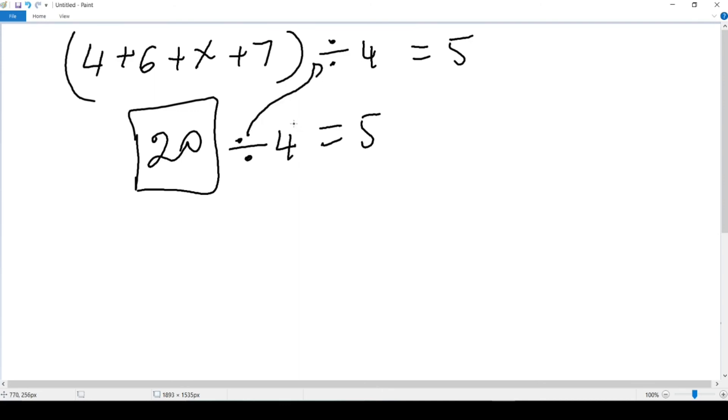So this whole thing right here inside my parenthesis should be equal to 20. So I have 4 plus 6 plus X, the number that I don't know, plus 7—that should give me 20. Let me count these numbers that I have and see what is missing from it to give me 20. So 4 plus 6 that's 10.